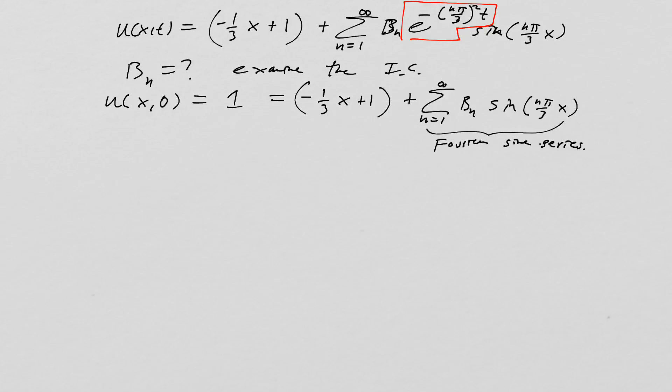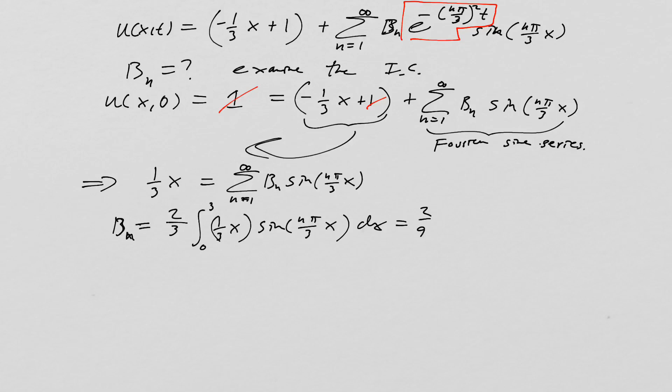We have a Fourier sine series there, and now we have to see what it's equal to. What we're going to have to do is move that over to the other side. We can see that the 1s cancel, and we end up with (1/3)x equals the sum from n=1 to infinity of b_n sin(nπx/3). To find the b_n's, we have to use the Fourier sine series formula, which says 2 over the length of the interval, which is 3, integrate over the full interval 0 to 3, times (1/3)x, the function that we're setting everything equal to, times sin(nπx/3).